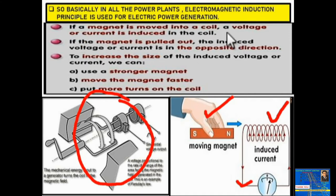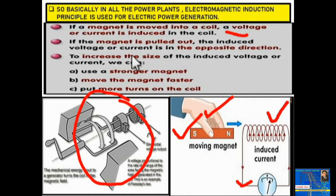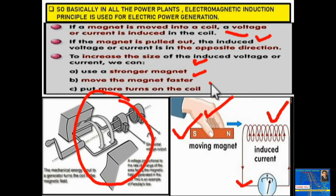If the magnet is pulled out, the induced voltage or current is in the opposite direction. To increase the magnitude of the induced voltage, you need a stronger magnet, move the magnet faster, or increase the number of turns of the coil. Faraday's equation states that induced EMF is directly proportional to the rate of change of flux: e = −N dΦ/dt, where N is the number of turns.